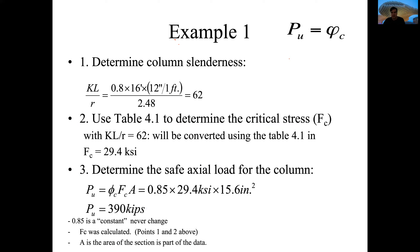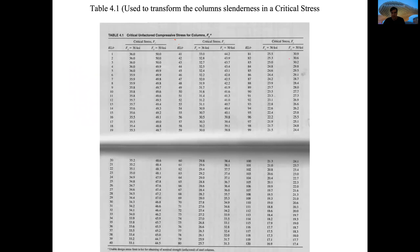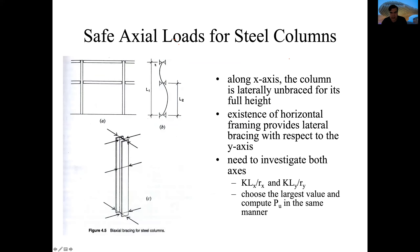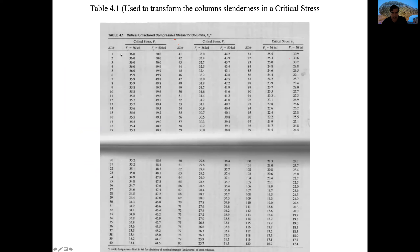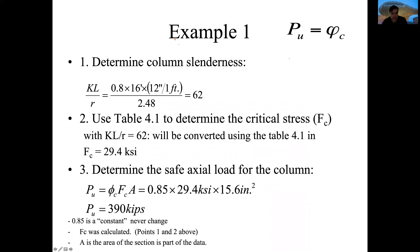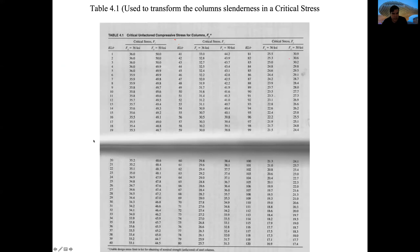This factor of 62 needs to be transformed into critical stress. We go to the table and look up the KL/R value of 62. If you got 62.4, you would use 62; if you got 62.5, you would use 63. For our A36 steel, 62 corresponds to a critical stress of 29.4 KSI.